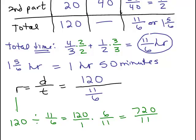So that's the rate, right? The rate is 120 divided by 11 sixths which is 720 elevenths miles per hour.